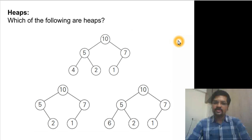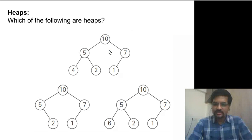We have three binary trees here. Which of them are heaps? The first one is a heap because it satisfies the shape property as we have already seen and it satisfies the heap property also, parental dominance. 10 is greater than or equal to 5 and 7. 5 is greater than or equal to 4 and 2. 7 is greater than or equal to 1. And hence it's a heap.